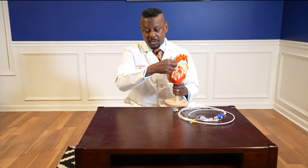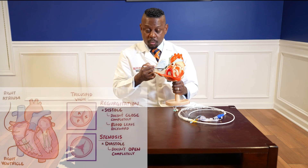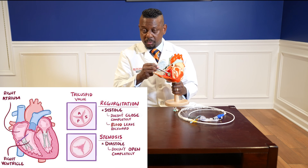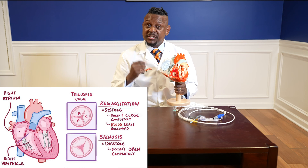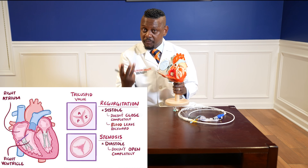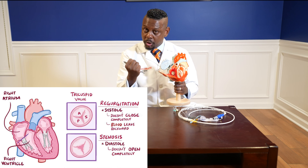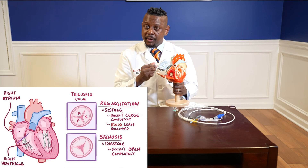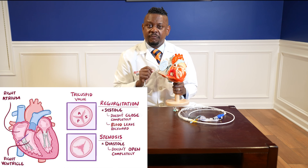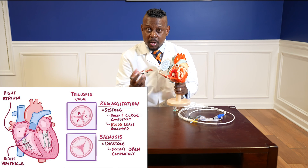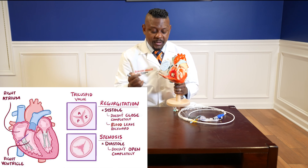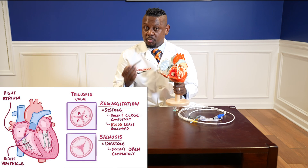Another reason involves the tricuspid valve, which sits between the right atrium and right ventricle. When the valve opens, blood goes from the right atrium to the right ventricle; when it closes, blood stays in each area. If there's a problem with the valve — whether it's leaking or stenotic and hard to open — that can compromise the function of the right ventricle and blood flow to the pulmonary artery.